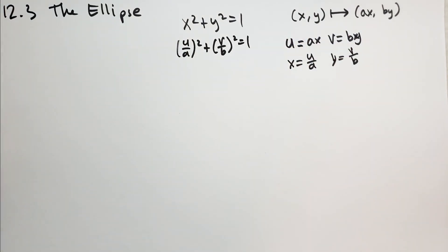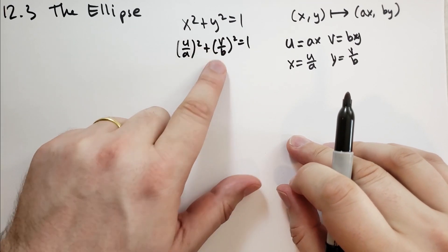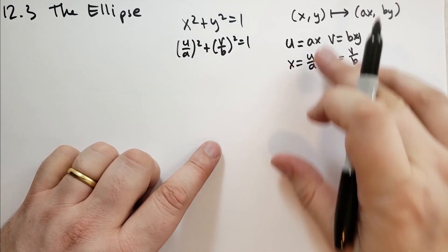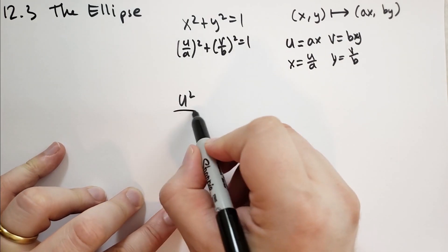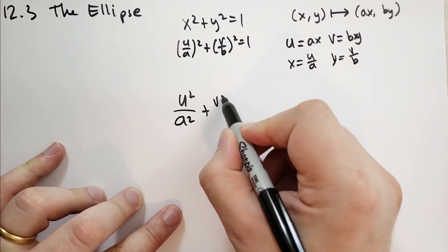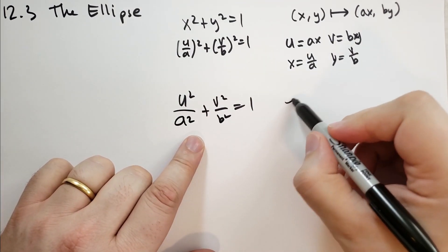And so in the u and v plane, in order to satisfy this equation, you have to stretch u and v from where the circle originally was. So we have this new equation, u squared over a squared plus v squared over b squared is equal to 1. And we're going to call this shape an ellipse.